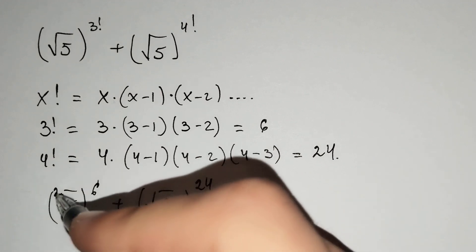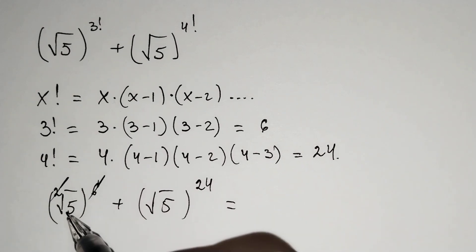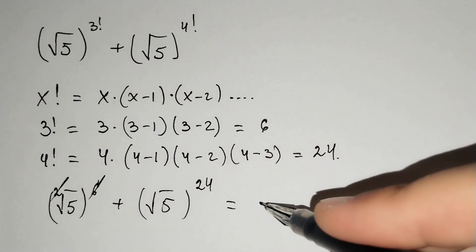This is just the second degree. You may cancel this and 5 power 3 remain here.